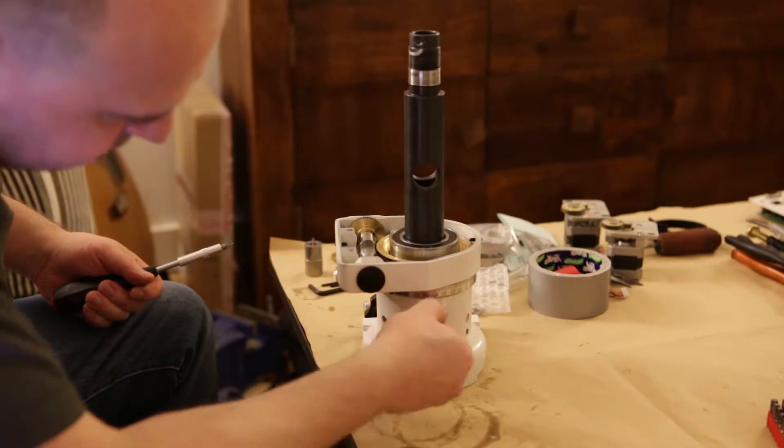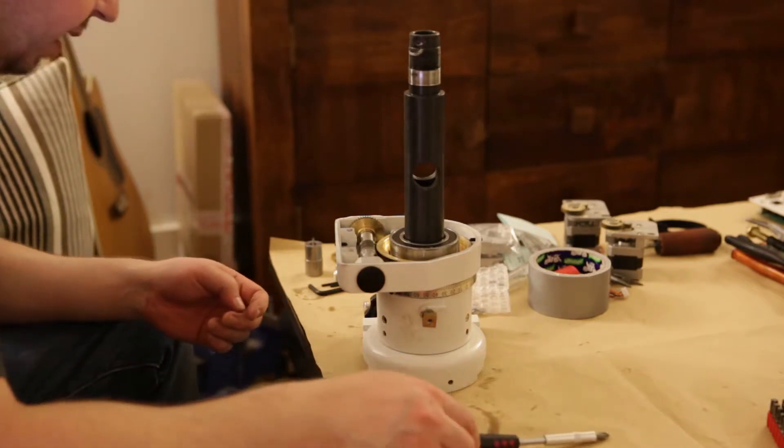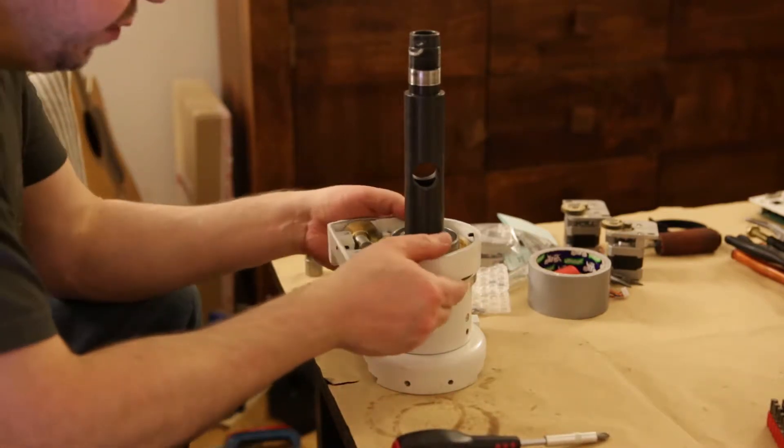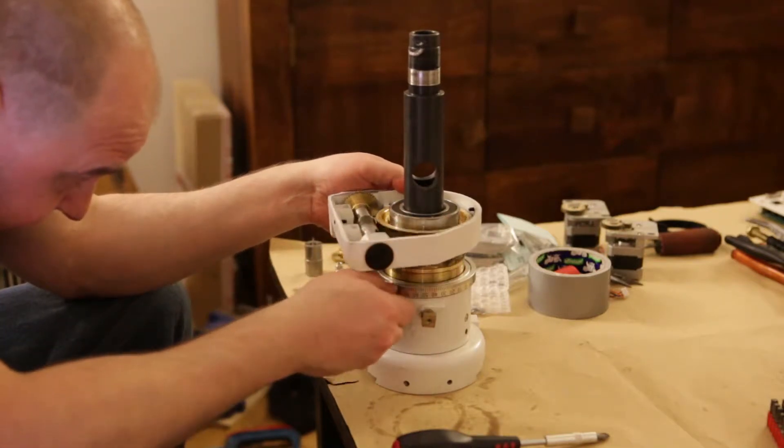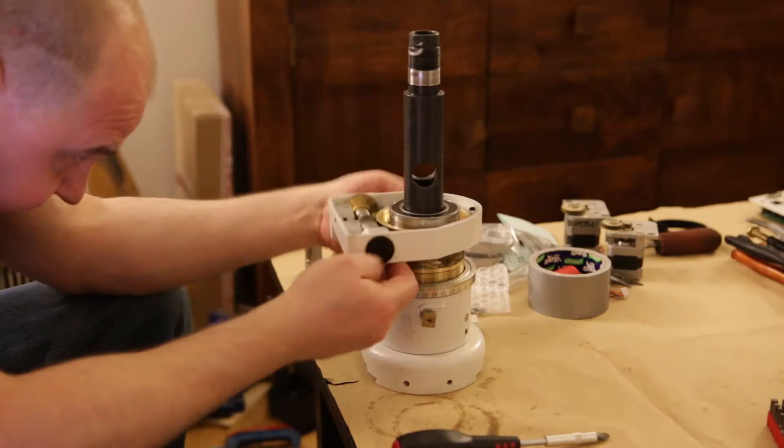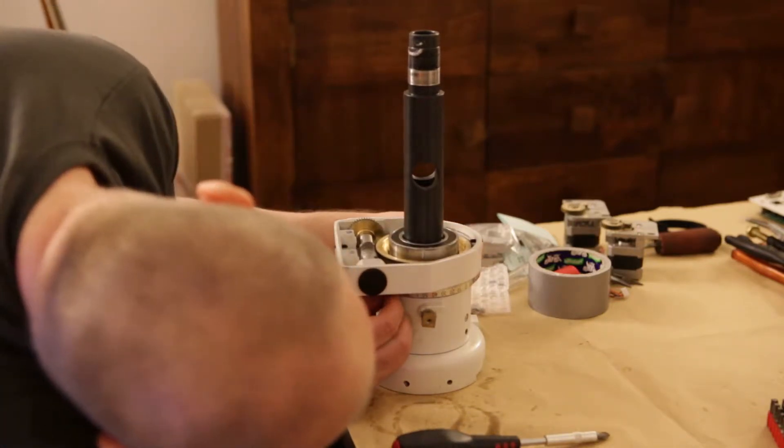Unscrew the clutch bolt several turns and then we should be able to lift this entire assembly. I'm not sure if this setting circle is supposed to come with it or not.